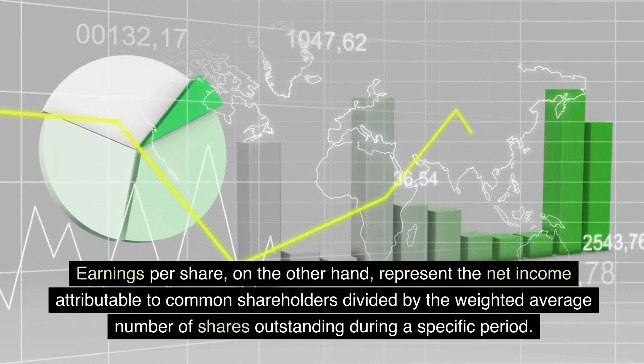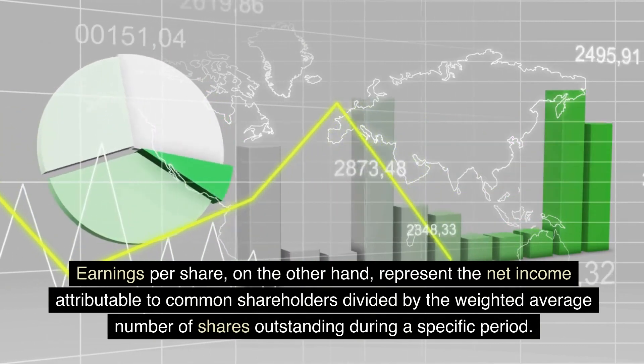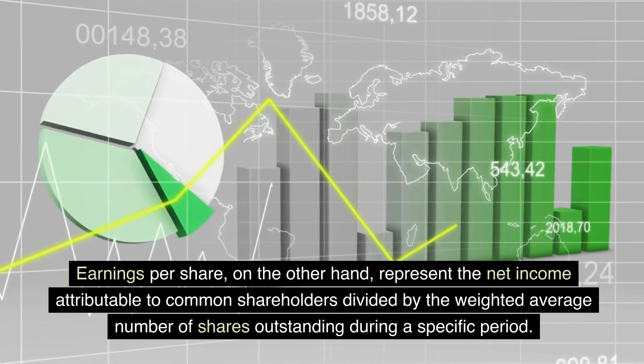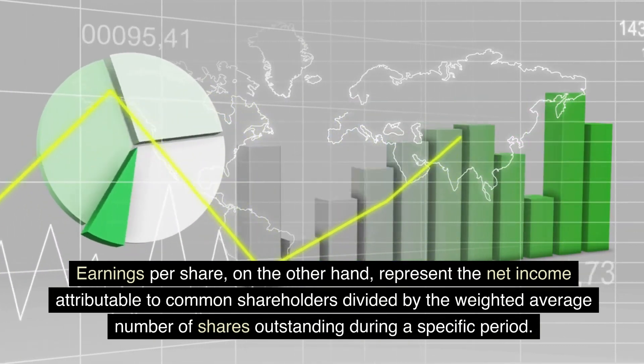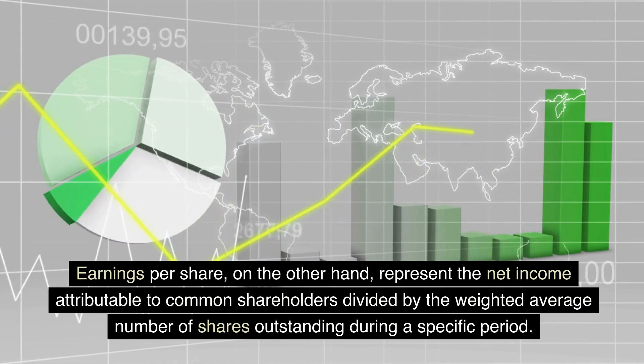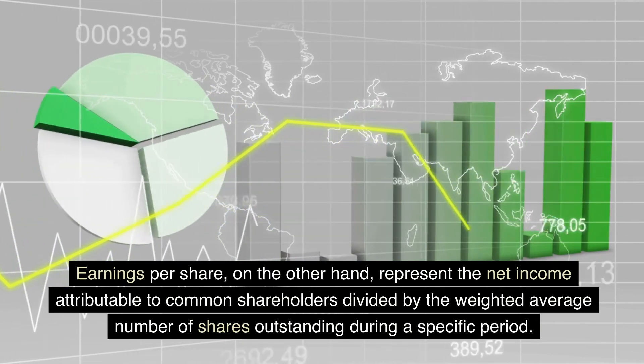Earnings per share, on the other hand, represent the net income attributable to common shareholders divided by the weighted average number of shares outstanding during a specific period.